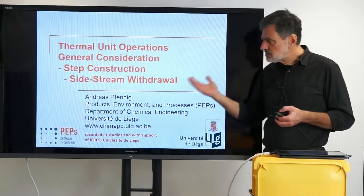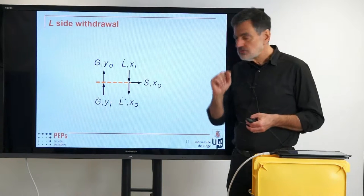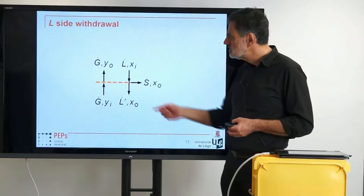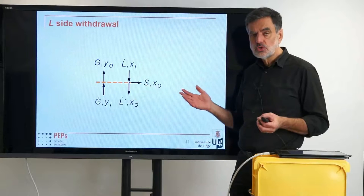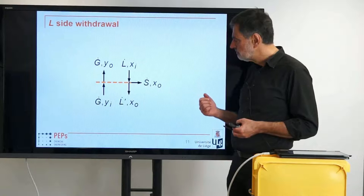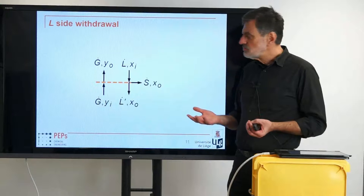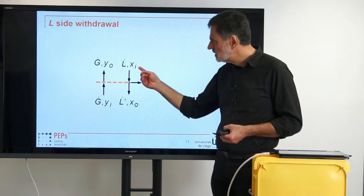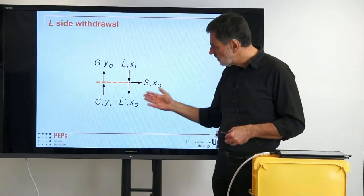So let's look at such a side stream withdrawal. Let's first look at the case where we have a side stream withdrawal just from the L-dot phase — the withdrawal is just from one of the two phases. We see that we have an L-dot entering, an L-dot prime leaving below, and in between we remove the side stream S-dot. The G-dot remains unchanged because we don't remove anything from the G-dot stream.